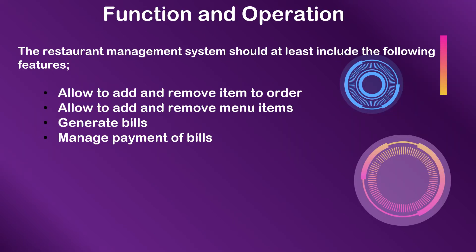For function and operation, the restaurant management system should at least include the following features: allow to add and remove items to order; allow to add and remove menu items; generate bills; manage payment of bills. On the next slide, we will present to you a chronological program using MU8086 in creating the restaurant management system.